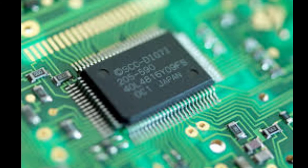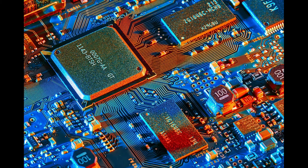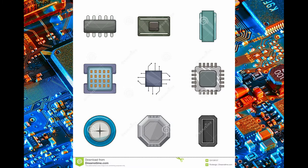Moving on to the next topic: microprocessors and microcontrollers. A microprocessor is a computer processor where the data processing logic and control is included on a single integrated circuit or a small number of integrated circuits. The microprocessor contains the arithmetic, logic, and controlling circuits required to perform the functions of a computer's central processing unit (CPU).